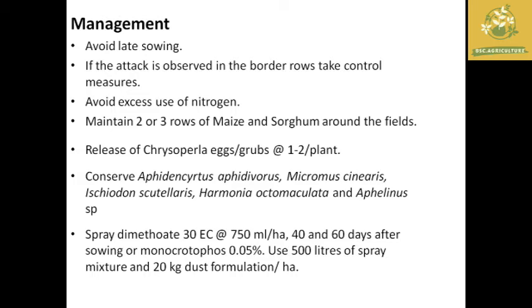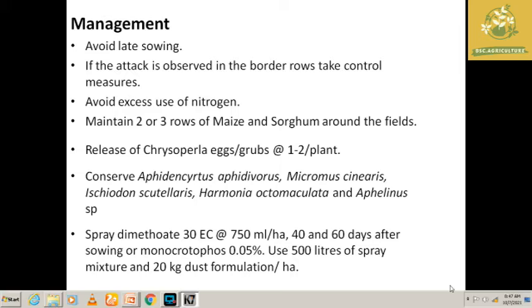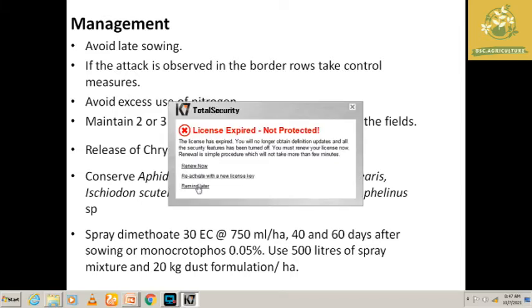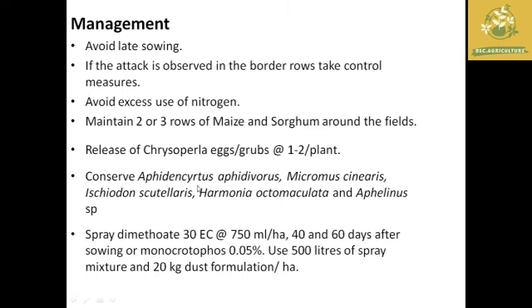If the pest population is high, move to chemical spraying such as dimethoate 30 EC at 150 ml per hectare, or spraying of monocrotophos at 0.05% at field level. These chemicals can be sprayed at a volume of 500 liters of spray mixture, or 20 kg dust formulation per hectare can be applied — this is effective against aphids.